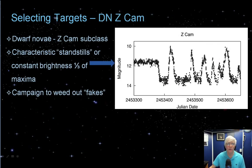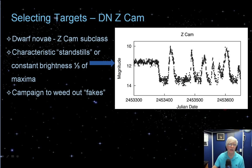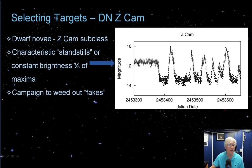Z Cam stars are truly intriguing — like recurrent novae, they will brighten and dim and then go through what's called a standstill, as shown by the light curve. The magnitude of the star basically goes flatline, usually at a constant brightness of about one-third of its maximum. Some stars have been incorrectly classed as Z Cam types, and the AAVSO has a campaign to weed those out. Maybe you'd be interested in helping with that campaign.